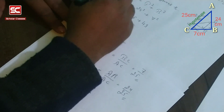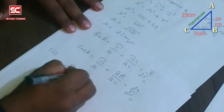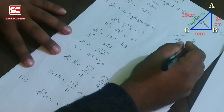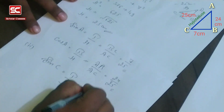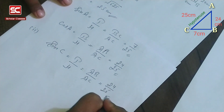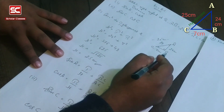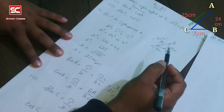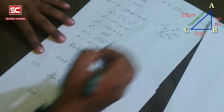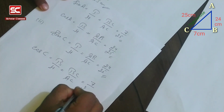Now we come to Question 1, Part 2: find sine C and cos C. Sine C equals perpendicular upon hypotenuse against angle C. The perpendicular is AB and the hypotenuse is AC, so sine C equals AB upon AC, which is 24 upon 25. Then cos C: cos equals base upon hypotenuse against angle C. The base is BC and hypotenuse is AC, so cos C equals BC upon AC, which is 7 upon 25.